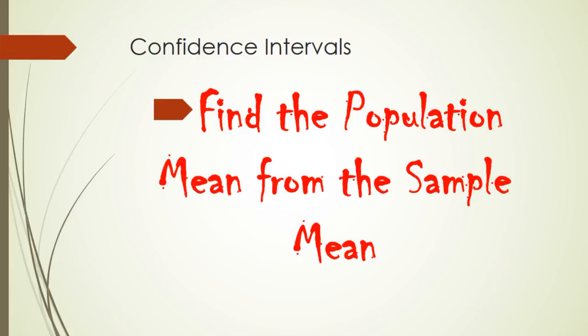In other words, we have a sample. We've gone out and said, who are you voting for to a thousand people? From those thousand people, we want to figure out how the 130 million voters are going to vote. We want to take our sample mean, what happened in that sample, and extrapolate it to what happened in the whole population.